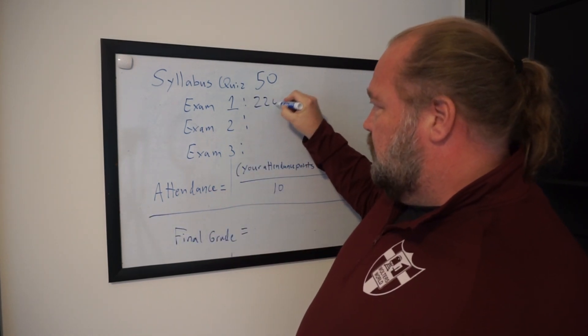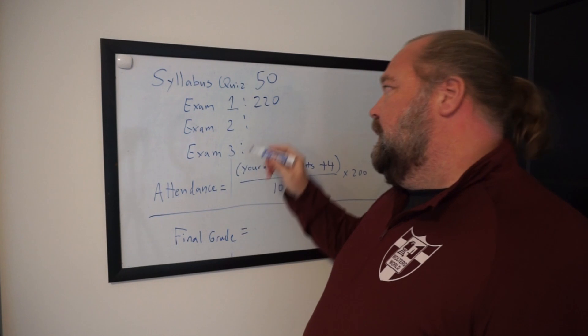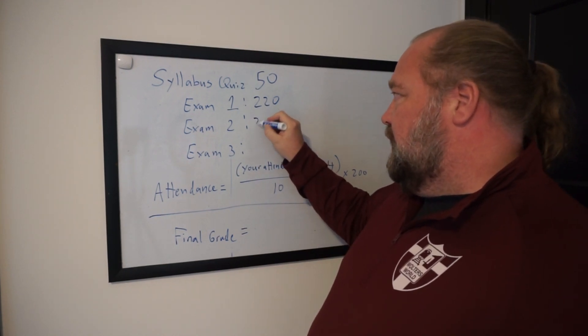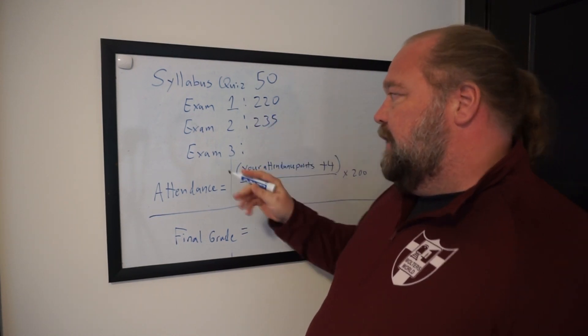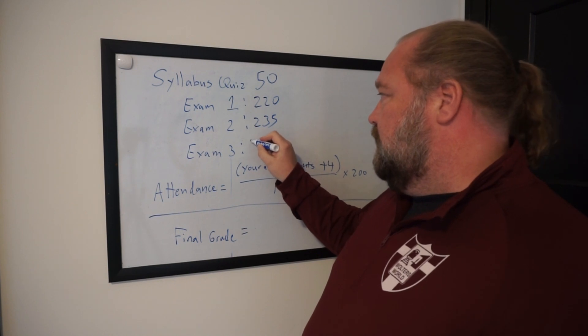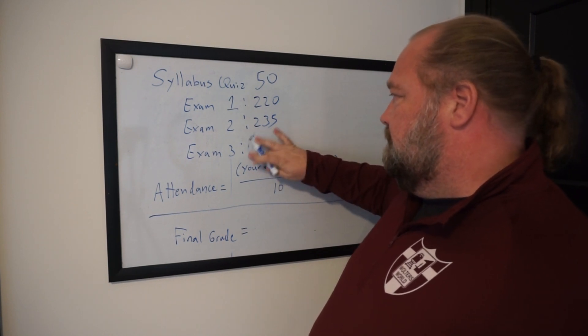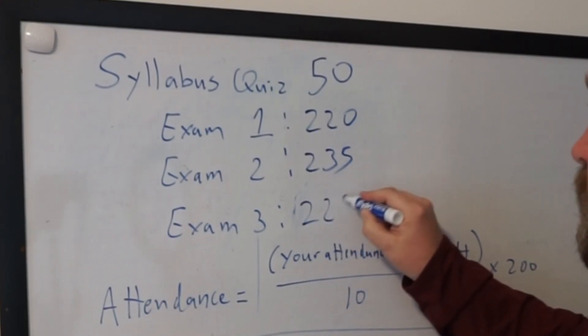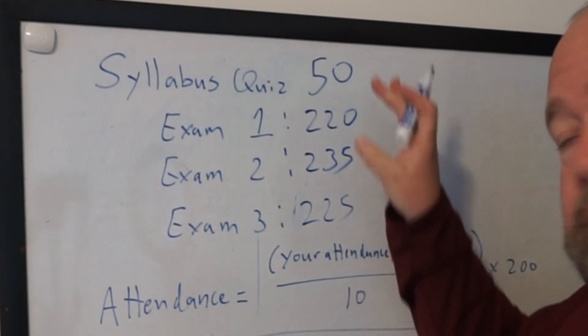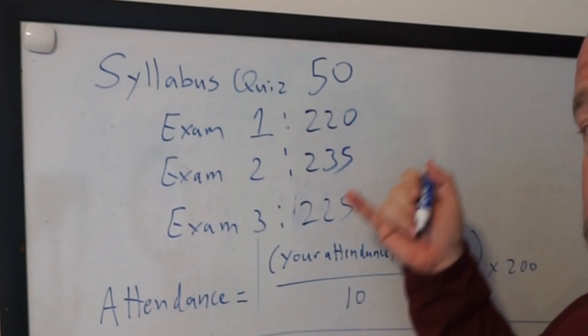First exam, let's say you got 220 out of 250. Second exam, let's say you got 235. And last exam, on the third exam, let's say you got 225 points. So those, you can find the numbers right there. There's your points for it.